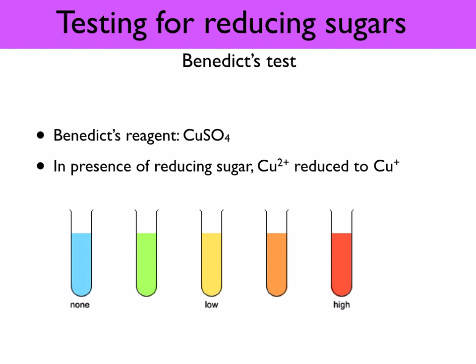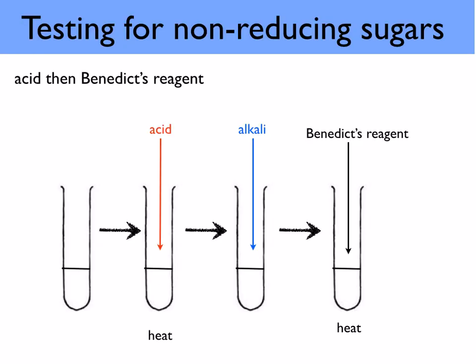If the sample is a non-reducing sugar, it will remain blue with the Benedict's test. To test for a non-reducing sugar: take another sample and add acid, then heat in a water bath for about 5 minutes so the acid hydrolyzes the non-reducing sugar. Then add alkali to neutralize the acid and allow it to cool. When you retest with Benedict's reagent, you'll get a brick red precipitate, confirming a non-reducing sugar was present.